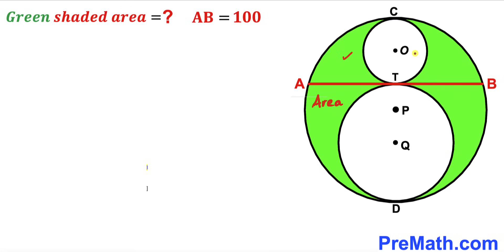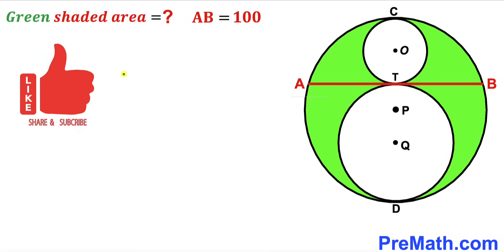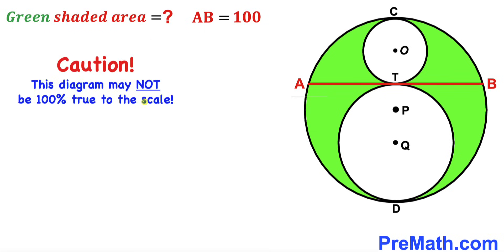The green shaded area refers to these four combined regions shown in the diagram. Please don't forget to give a thumbs up and subscribe, and keep in mind that this figure may not be 100% true to scale.